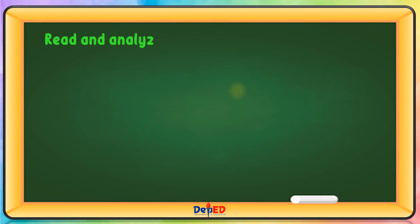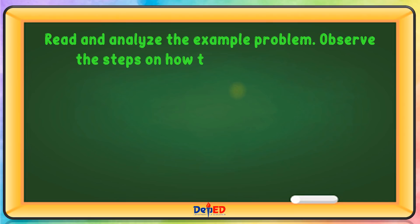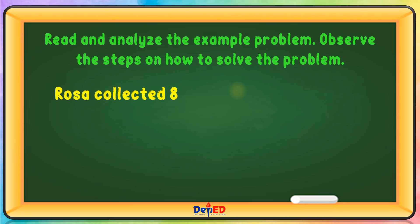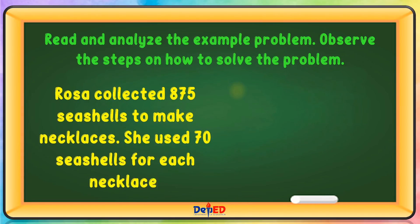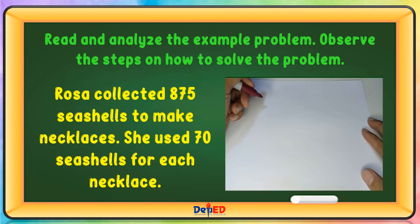Read and analyze the example problem. Observe the steps on how to solve the problem. Rosa collected 875 seashells to make necklaces. She used 70 seashells for each necklace. To find the answer, you must divide 875 by 70.